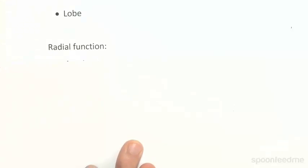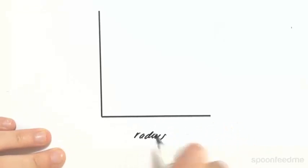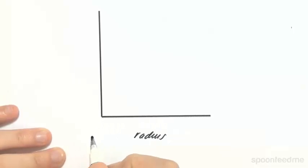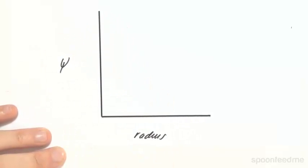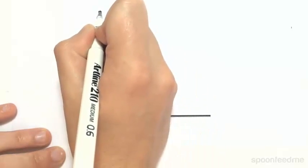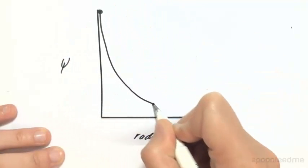For the radial function representation, the orbital is represented when we have the amplitude of the wave plotted against the distance from the nucleus. For a one-electron atom, we have our radius on the x-axis — distance from the nucleus, with zero being at the nucleus — and amplitude on the y-axis. The maximum amplitude is actually going to be at the nucleus, and as we get further from the nucleus, this amplitude will decrease.